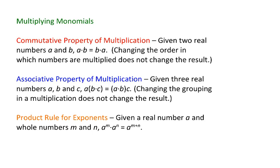The first one is the commutative property of multiplication. The commutative property of multiplication states that if you have two real numbers a and b, then a times b equals b times a. In other words, changing the order in which the numbers are multiplied does not change the result.